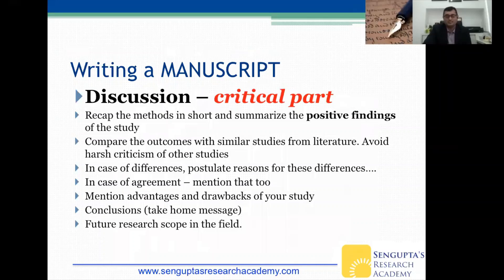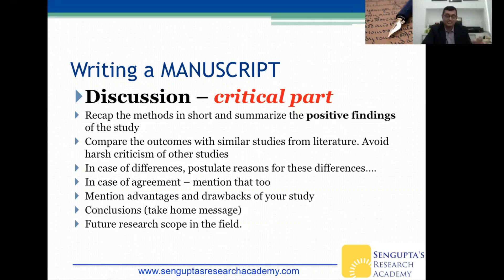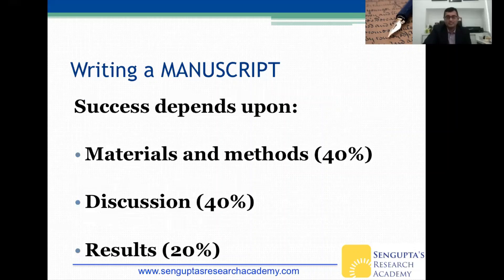The discussion is the most critical part — it really makes or breaks a paper. Recap the methods briefly, summarize the positive findings, and compare outcomes with similar studies from the literature. You are trying to fit your results into the existing jigsaw. Avoid harsh criticism of other studies; in case of differences, postulate reasons for them. In case of agreement, mention that too. Then mention the advantages and drawbacks of your study, and discuss conclusions and future research scope. Success really depends on how you write the materials and methods and then your discussion.